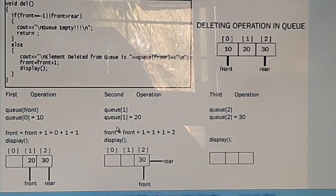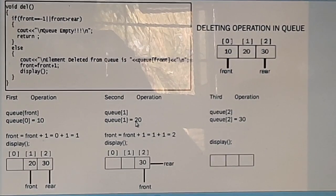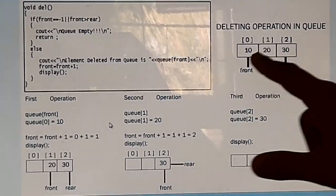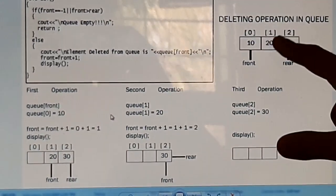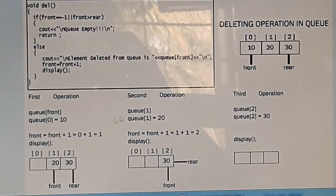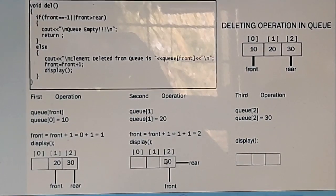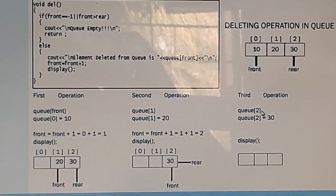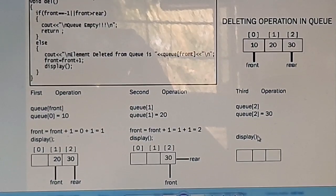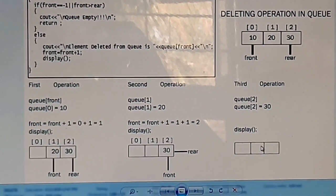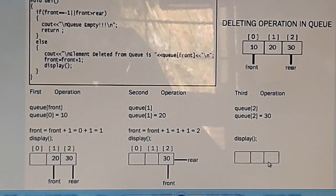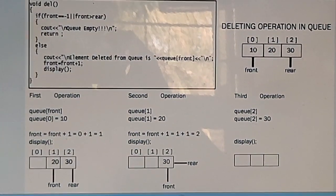For the second deletion, Q[1] = 20 is deleted, and front is incremented to the second location. After the third deletion, Q[2] = 30 is deleted. If we try to display the queue after all three deletions, it will be empty. This completes the deletion operation.